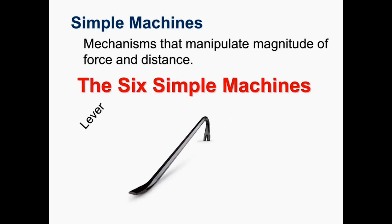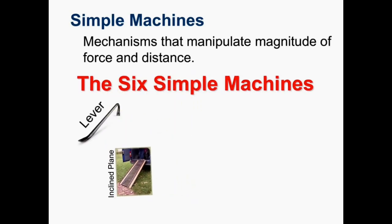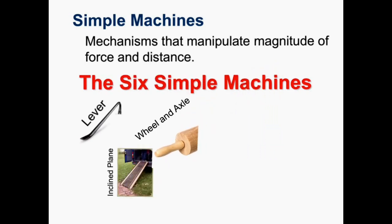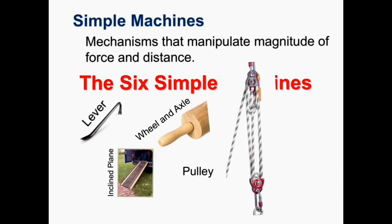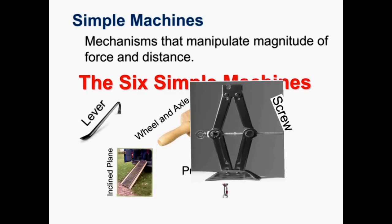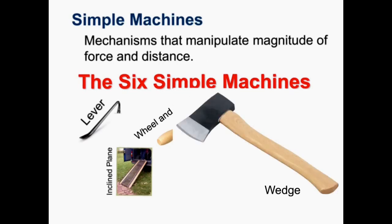First, we're going to go over the lever, then to follow will be the incline plane, the wheel and axle, the pulley, the screw, and then the wedge.